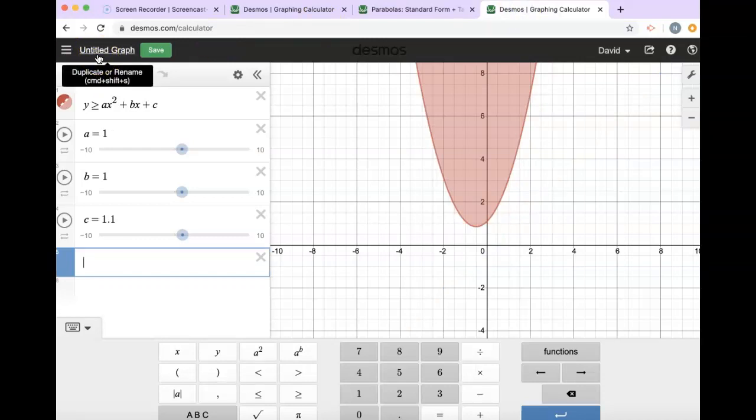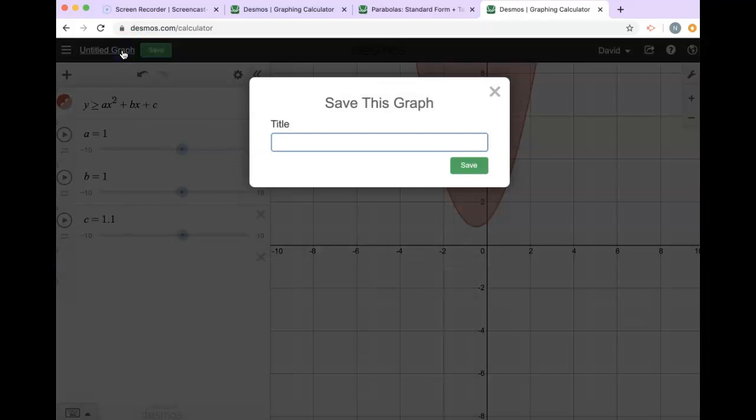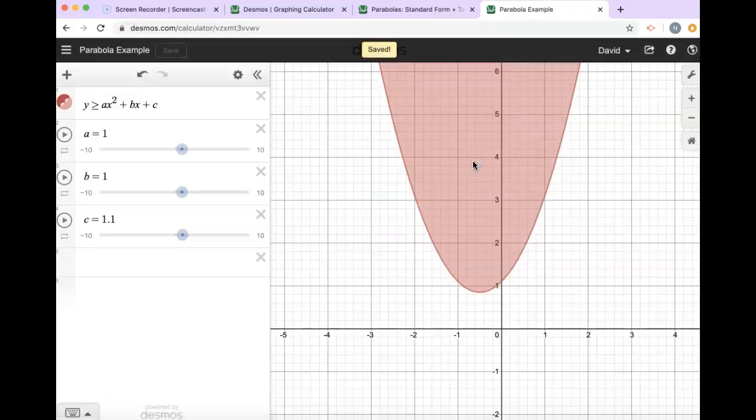So if I change my title to 'Parabola Example,' you click Save. We should be able to log in tomorrow in class and pull up this example and we'll work on it together.